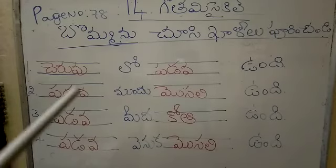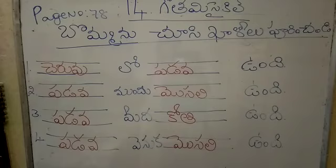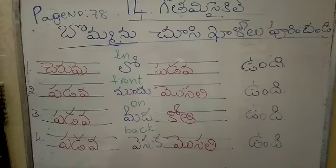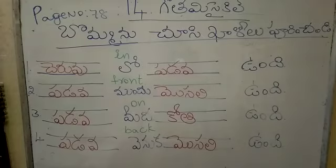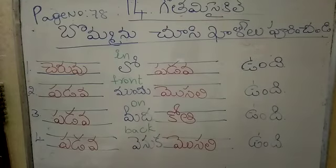Understand, children? I will write these four English meanings now. Low means in. Mundu means front. Meeda means on. Venuka means back. Don't forget these words, children. These words are coming in further classes — 7th class, 8th class, 9th class, 10th class. If you want to write a sentence, you should use these words.